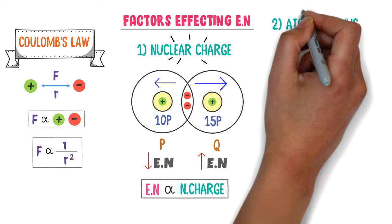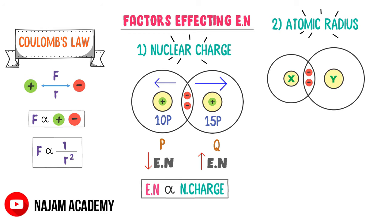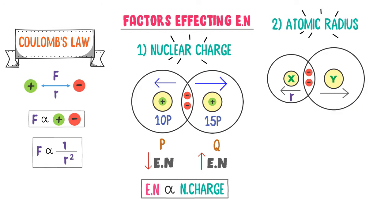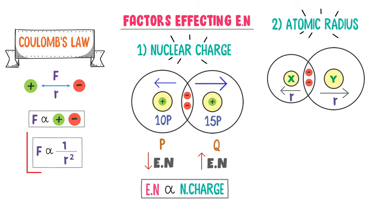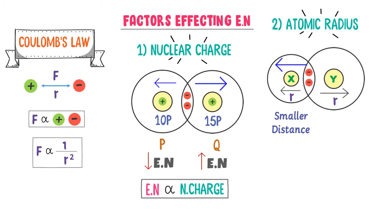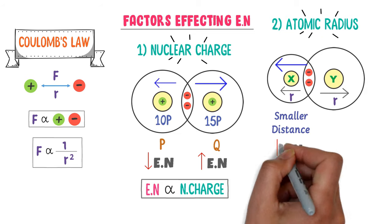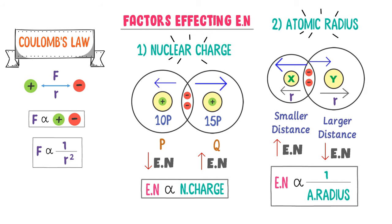The second factor is atomic radius or shielding effect. Consider two atoms, X and Y. Let them share one pair of electrons to form a covalent bond. The size of X atom is smaller, so its atomic radius R is smaller. The size of Y atom is bigger, so its atomic radius R is bigger. According to Coulomb's law, attractive force is inversely proportional to the square of distance between charges. The distance of the nucleus of X atom from the shared pair of electrons is smaller, so the nucleus of X atom strongly attracts the shared pair of electrons — hence electronegativity of X is higher. The distance of nucleus of Y atom is larger, so it weakly attracts the shared pair of electrons, and electronegativity of Y is smaller. Therefore, electronegativity is inversely proportional to atomic radius.